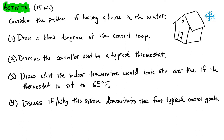In part three, draw as a plot over time what the indoor temperature would look like, assuming the outside is some chilly temperature — say 40 degrees — and that you set your thermostat to 65. What does the indoor temperature look like over time? Then finally, go back to the four control goals and discuss whether or not a typical thermostat achieves each of those four control objectives. Go ahead, write those down, pause the video, chat with your fellow students, and then come back and we'll discuss.